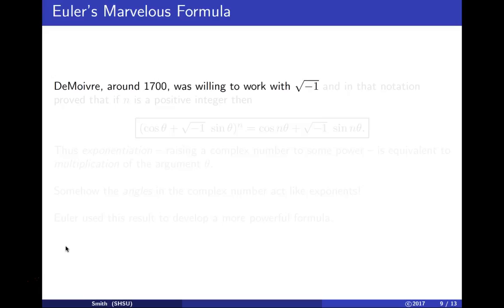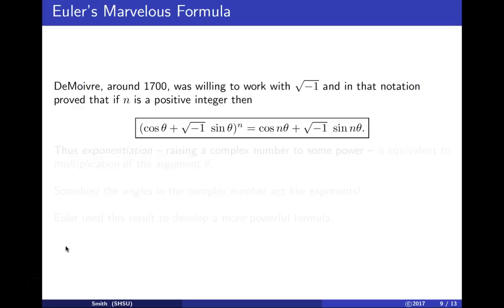De Moivre, before Euler around 1700, worked with √(-1) and observed that if you take cos(θ) + √(-1)·sin(θ) and raise it to the nth power, you get cos(nθ) + √(-1)·sin(nθ). It's as if you multiplied the angle by n.